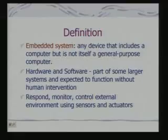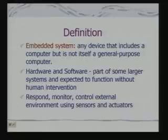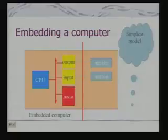Let's start with the definition of an embedded system. What is an embedded system? Any device that includes a computer but is not itself a general purpose computer. It has hardware as well as software, it is part of a larger system, and is expected to function without human intervention. So basically, we are talking about embedding a computer into an appliance, and that computer is not expected to be used for general purpose computing.